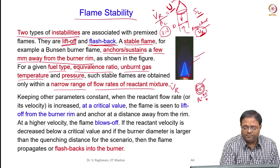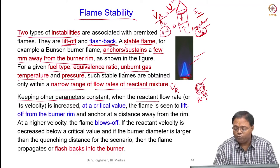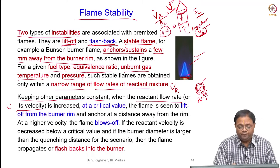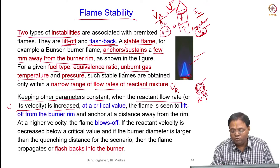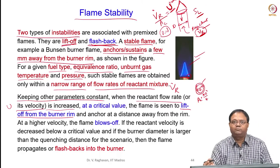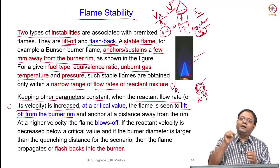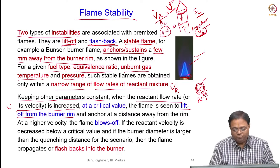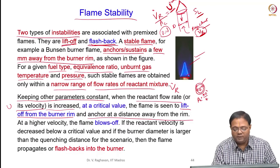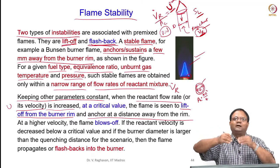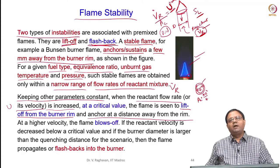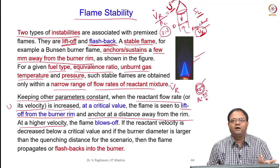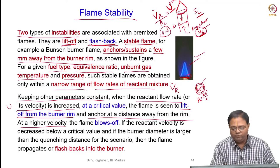Keeping other parameters constant but increasing the reactant flow rate — associated with velocity U — at a critical value the flame is seen to lift off from the burner rim. This is because the unburnt reactant velocity U is higher than the flame speed, trying to push the flame away. The flame will go away from the burner rim and anchor at some distance where there is a match of local U and SL. At a higher velocity, the flame will blow off because it cannot find any match and atmospheric interference is higher.